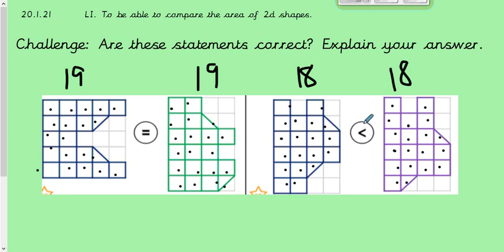And then the other one, the blue one was 18 squares, that's the area, and the purple one had an area of 18 squares as well. So therefore this symbol is incorrect. It should in fact be an equal sign because they have the same area. OK,